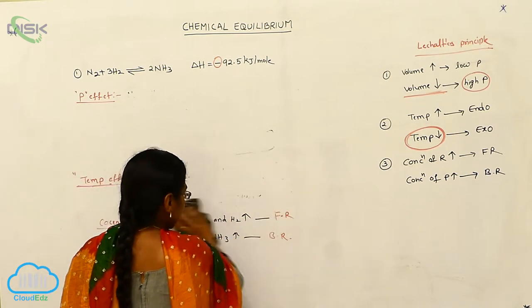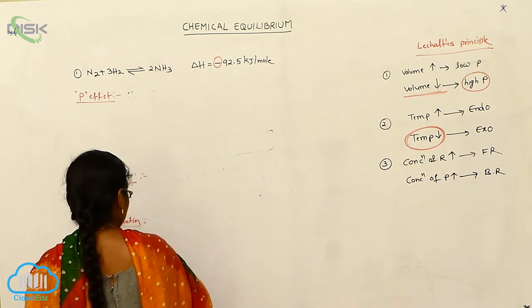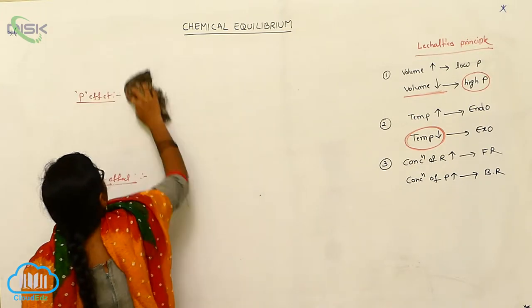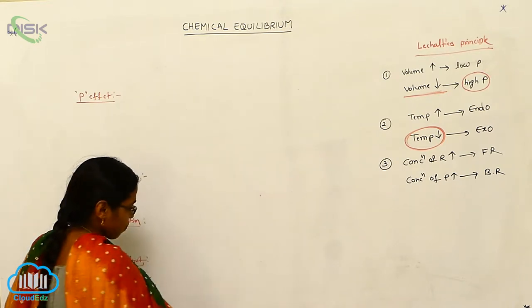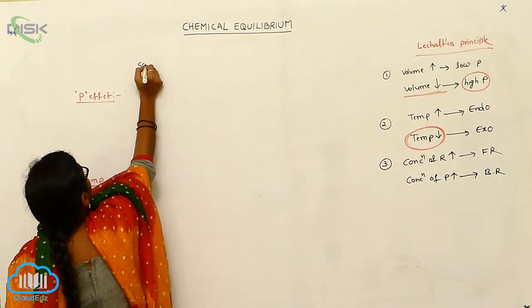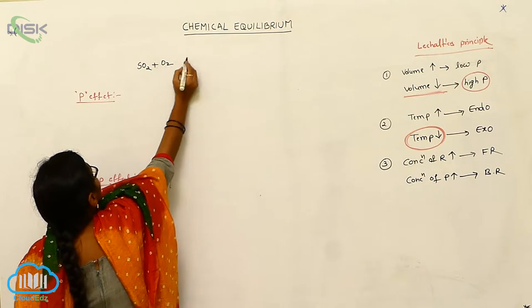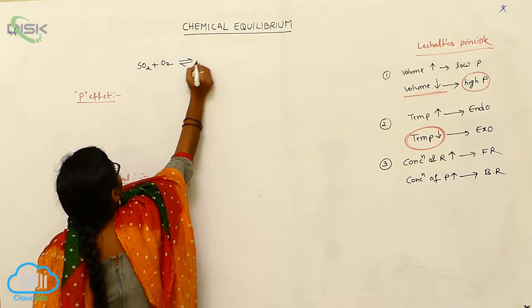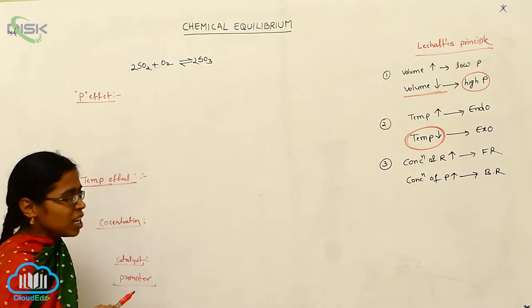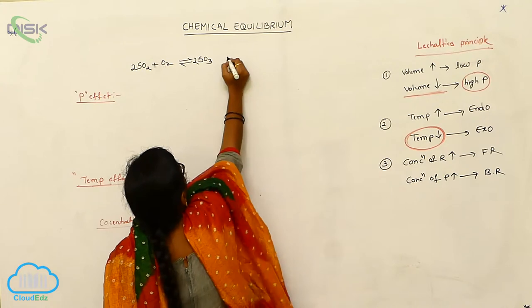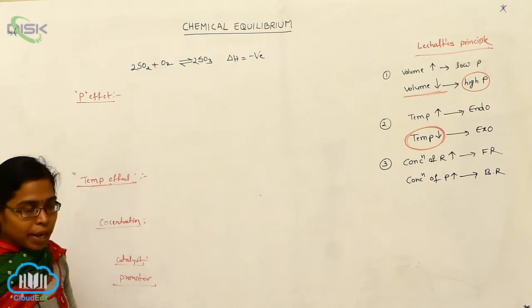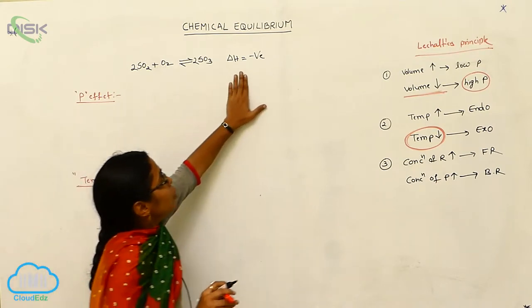The second application is the preparation of sulfur trioxide. For this, sulfur dioxide reacts with oxygen to form sulfur trioxide: 2SO2 + O2 → 2SO3. The delta H for this reaction also has a negative value, meaning it is an exothermic reaction.